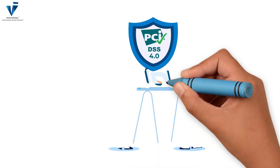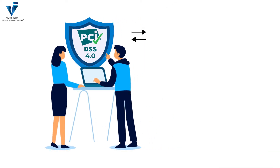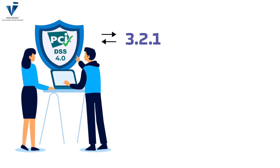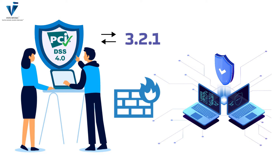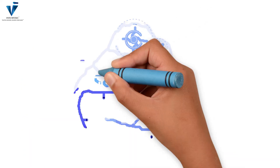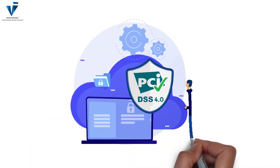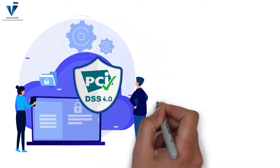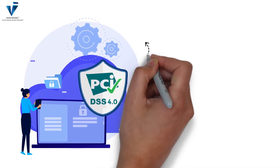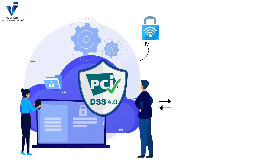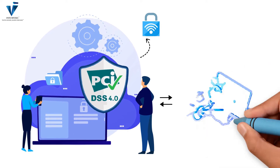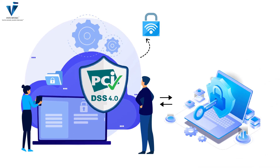Moving on, let us understand the general description of changes introduced in PCI DSS 4.0. PCI Requirement 1 of PCI DSS 3.2.1 primarily focused on firewalls and router configurations. However, the updated PCI DSS 4.0 version reflects and focuses on network security controls, replacing firewalls and routers with network security controls. This is mainly to support a broad range of technologies to meet the security objectives traditionally met by firewalls.